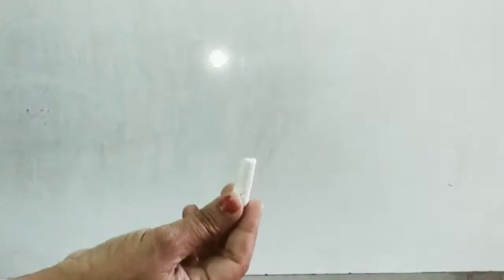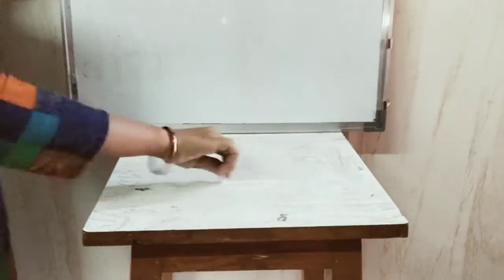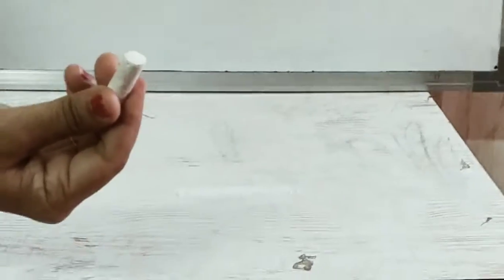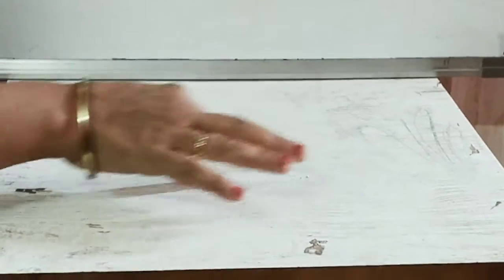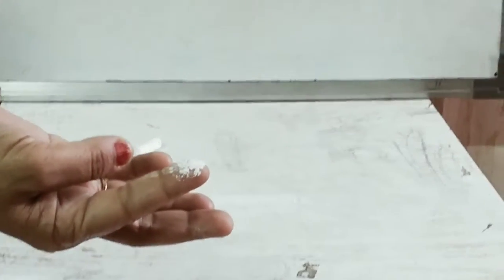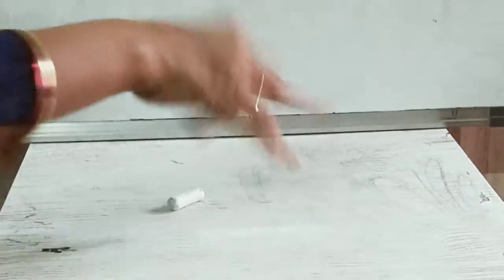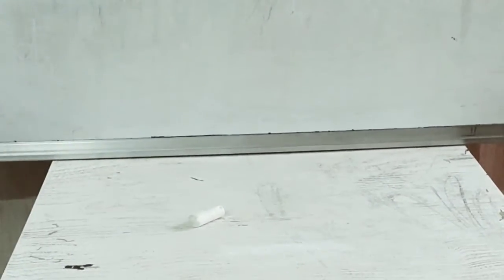I observe that a number of particles are there in this chalk. The chalk is made from a large number of small particles. Next, I have one blade. This table is made from wood, and it is also made from small, small particles.